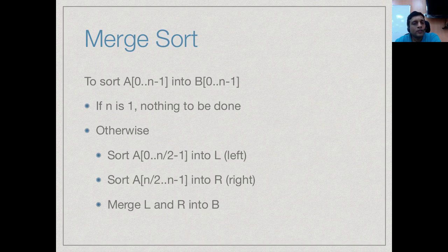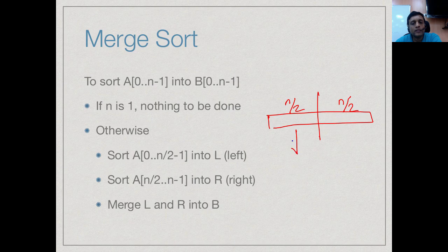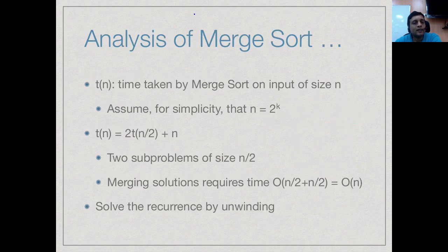Coming to merge sort itself: we take a list of size n, split it into two lists of size n/2, sort these separately, and then merge. If T(n) is the time taken by merge sort on an input of size n, then it requires sorting two lists of size n/2, plus O(n) time to merge them.